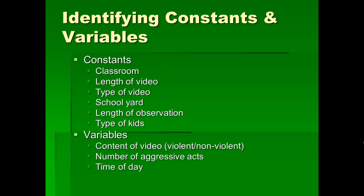The constants in this experiment include: the same classroom, the same length of video, the same type of program, the same schoolyard, the same length of observation, and the same type of kids. Now you may say we randomly assigned 25 kids to one condition and 25 to another — and that's correct. However, the whole point of random assignment is that it creates equivalent groups, groups which are similar on the major important characteristics. So when I say the same type of kids, I'm actually correct, because the group of 25 kids in one condition are relatively similar to the group in the other condition.